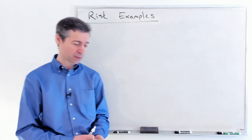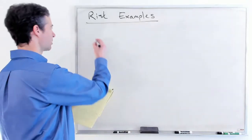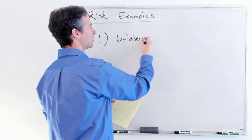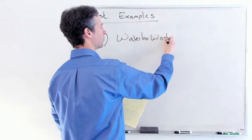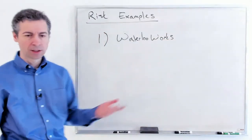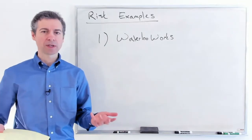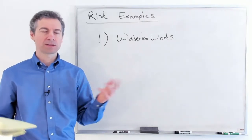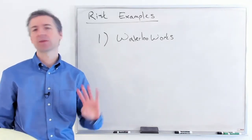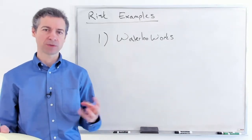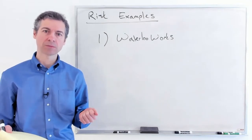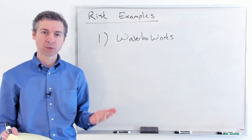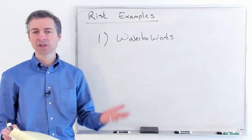Just to give you some examples so you can see the spectrum a little better — not as dramatic as loss of life, but think about it. Let's say you were to work on a system like Waterloo Works. You're all familiar with Waterloo Works and getting your co-op placements. Co-op is very important to you, so think about it from your perspective as a user of the system.